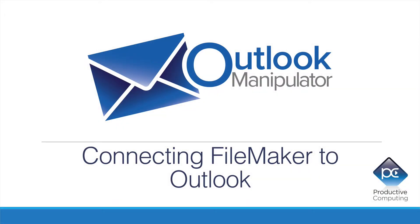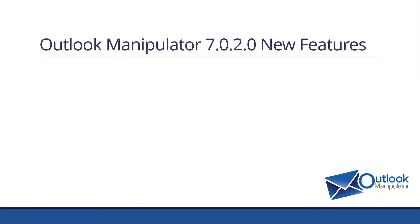I'm excited today to talk to you about the Outlook Manipulator and some of the changes. This refers to version 7.0.2. This first new feature is particularly exciting because you can now attach documents directly from a container field. You don't have to necessarily reference those attachments from your traditional hard drive or from a file path. You still have that option, but in addition, you can pull attachments directly from a FileMaker container, which gives you some nice capability. Let's go take a look at that one right now.